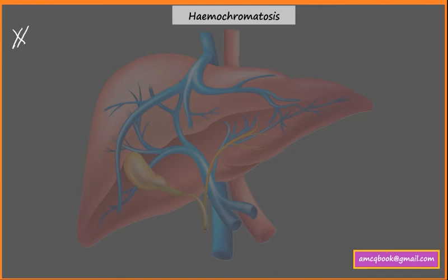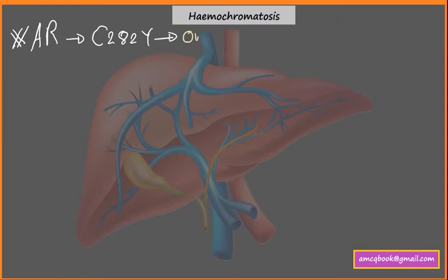Hemochromatosis is an autosomal recessive disease which involves a mutation in a gene called C282Y. This mutation leads to over-absorption of iron, and this large amount of iron leads to deposition in various organs.